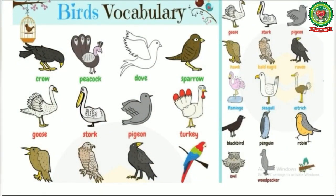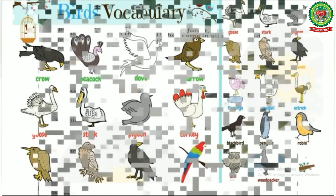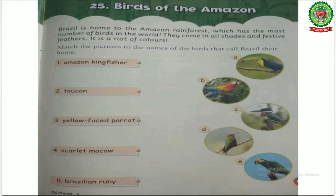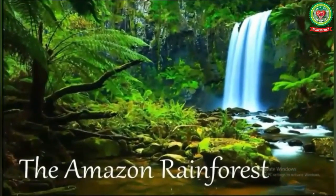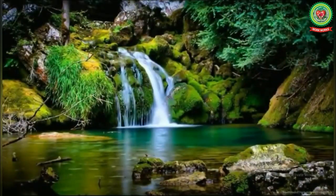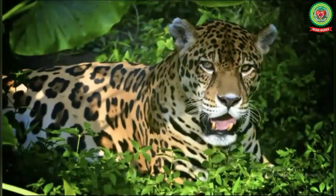We see many birds around us like crow, dove, sparrow, peacock, etc. Now in this chapter we will learn about the birds found in the Amazon rainforest. The Amazon rainforest is also known as the Amazon jungle. It is the largest forest having the largest collection of living plant and animal species in the world.